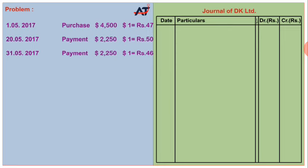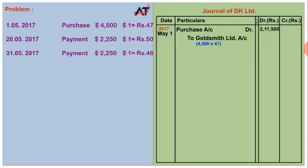On 1st May, goods were purchased on credit. When goods are purchased on credit, Purchase Account is debited and the supplier's account is credited. So: Purchase Account Dr ₹2,11,500 (i.e., $4,500 × ₹47), To Goldsmith Limited Account ₹2,11,500. Narration: Being goods purchased on credit.